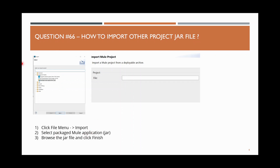Once you select import, a dialog box appears. There is an option called 'Package Mule Application from JAR'. Select that option, browse to the JAR file, and click finish. It will then create a project in Anypoint Studio with all the components.